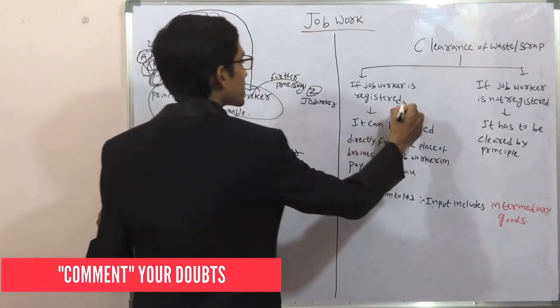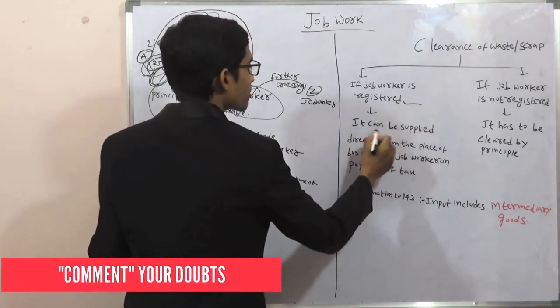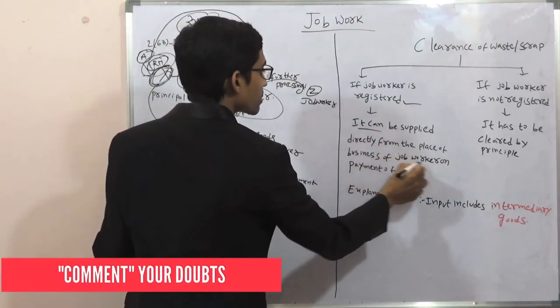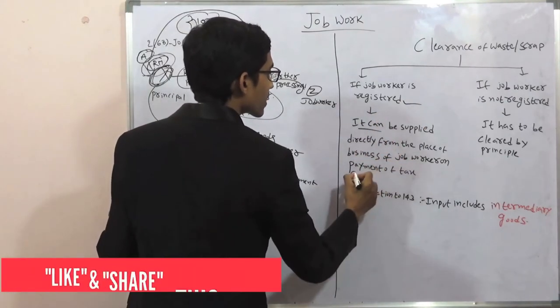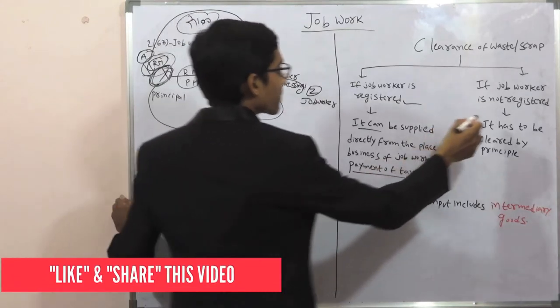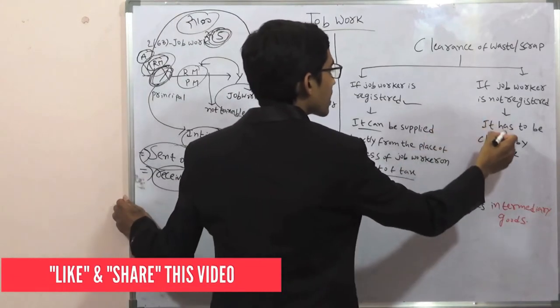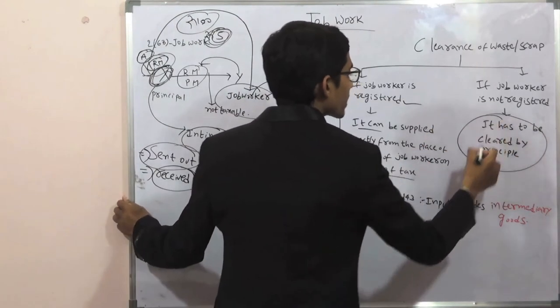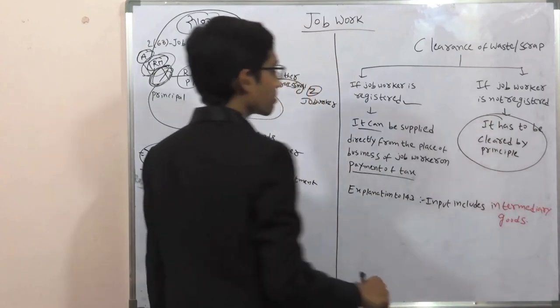If the job worker is registered, goods can be supplied directly from the place of business of the job worker with payment of tax. If the job worker is not registered, the goods have to be cleared by the principal.